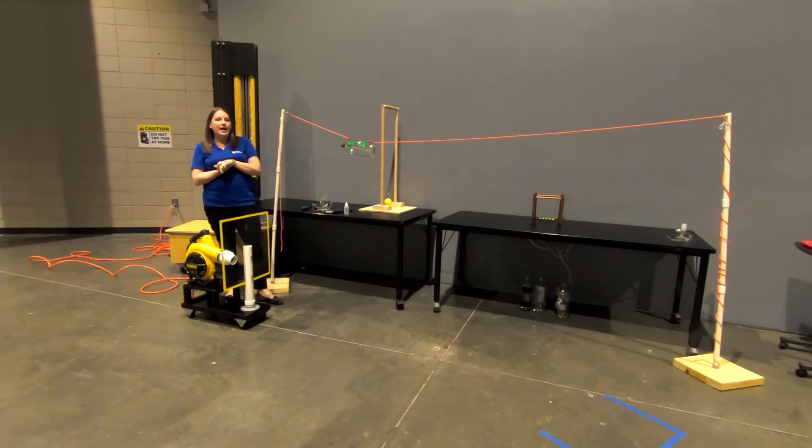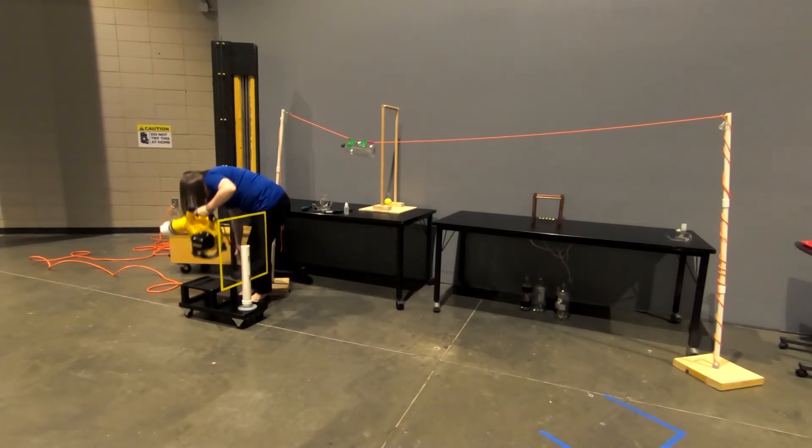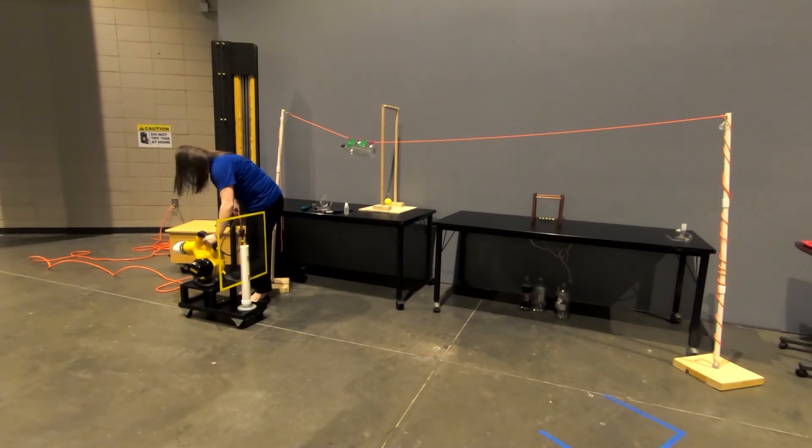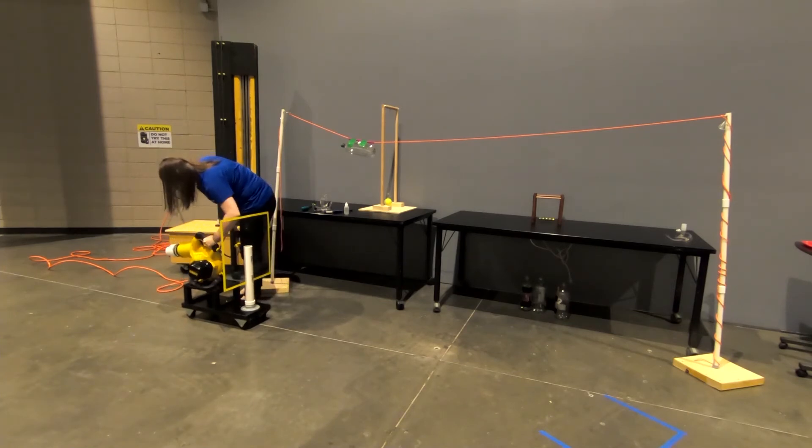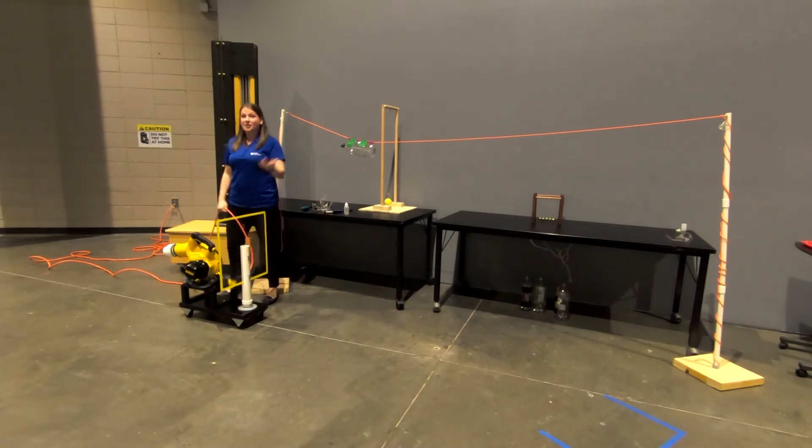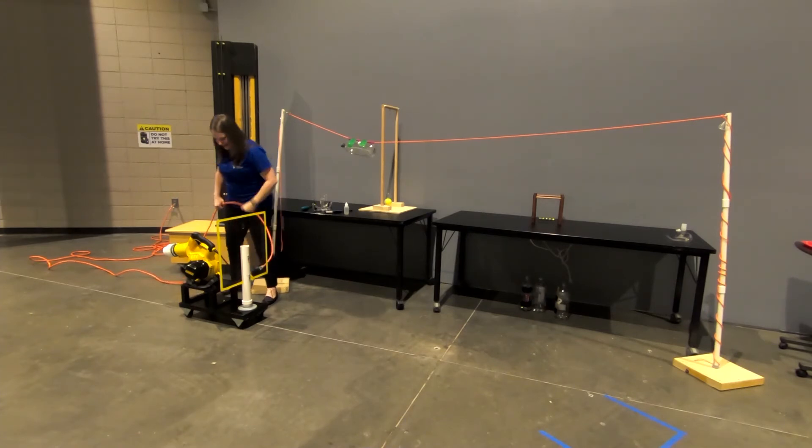So instead of having my system look like this, what if I just turn the leaf blower around? So let's do that. Make sure that it's nice and sturdy on there. Alright, we're going to make another prediction. Now, will the cart move forward, backward, or no move? So make your prediction. Do we have it? Okay, let's find out. Ready? Three, two, one.